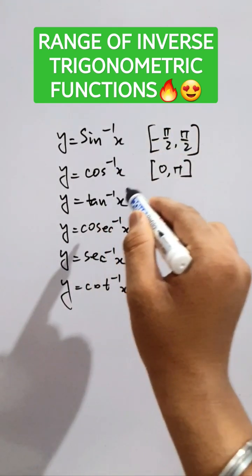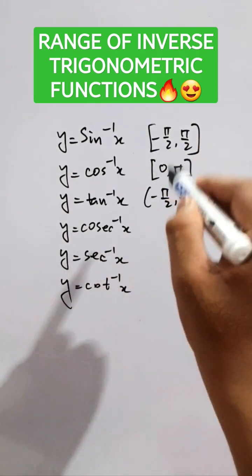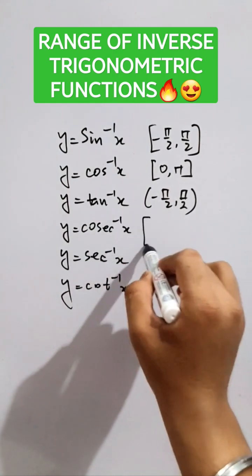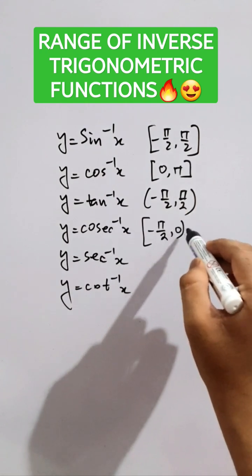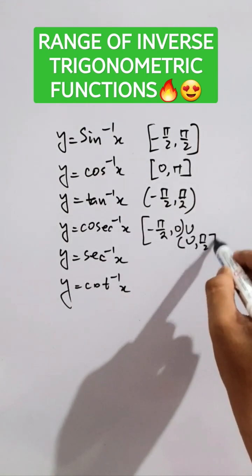Now, for tan inverse x, it will be open minus pi by 2 to plus pi by 2. Now, for the cosec inverse x, the range will be closed minus pi by 2 to 0 open union of open 0 to pi by 2.